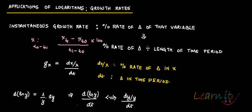This will give you the percentage change. Now, in case of derivatives, suppose there is any variable X. The percentage change in that variable is given by dx by X divided by the elapsed time period dt. Now, how can you use logarithm in this? It's easy to use logarithm in this case.